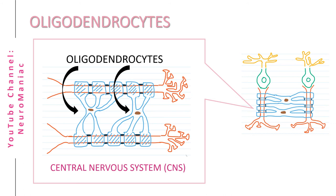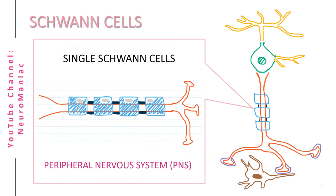Schwann cells are similar to oligodendrocytes; however, they are only found in the peripheral nervous system. They have limited myelination capacity, whereby a single Schwann cell can only cover one segment of a single axon. A typical exam question is...